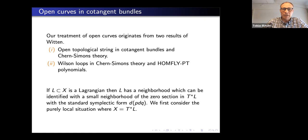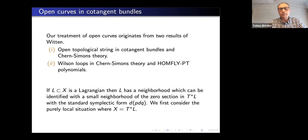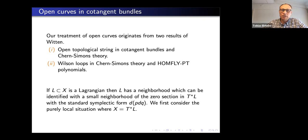I want to mention the two places where the ideas leading to what we call skein-valued Gromov-Witten invariants come from. Both are results of Witten: first, a relation between open topological strings in cotangent bundles and Chern-Simons theory; and second, the famous interpretation of HOMFLY polynomials in terms of Wilson loops in Chern-Simons theory.